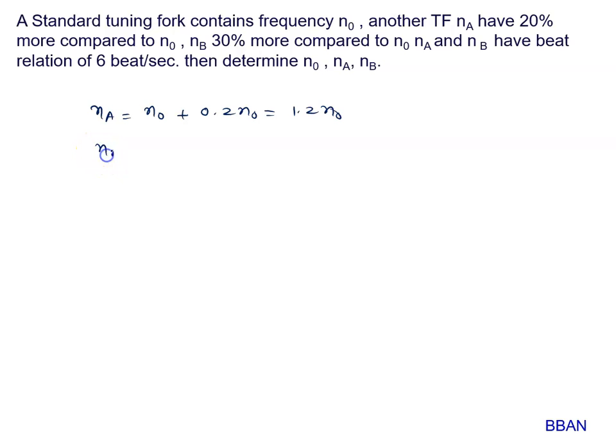NB is 30% more compared to N0. N0 plus 0.3 N0. So, it is 1.3 N0.